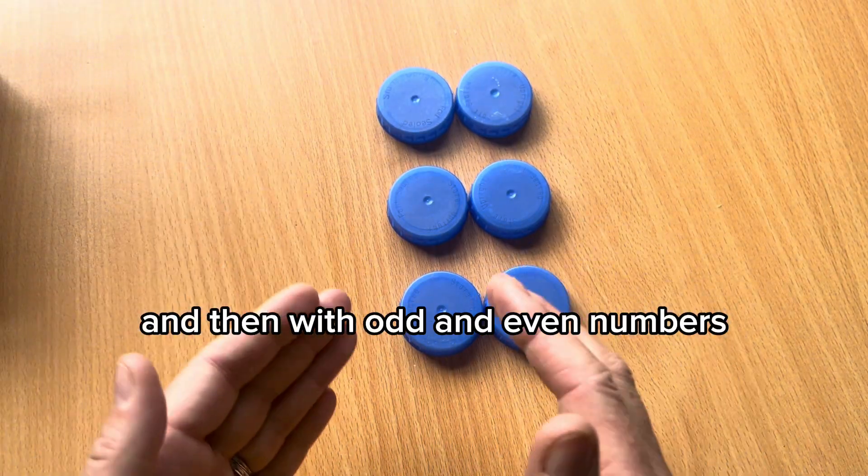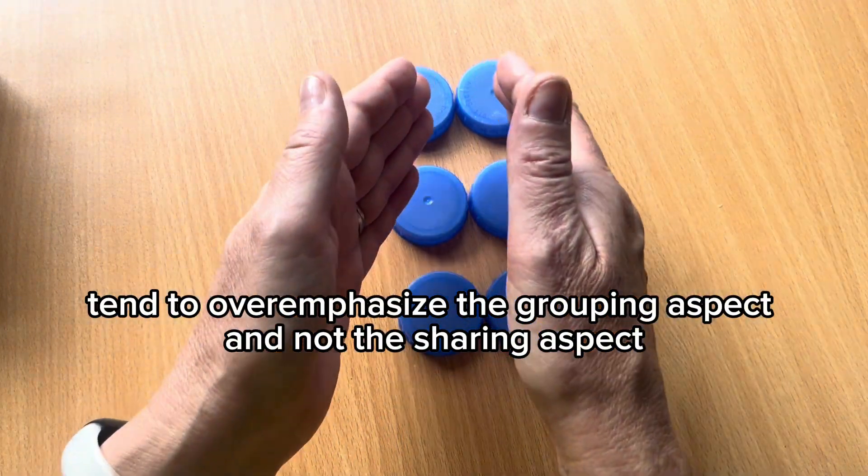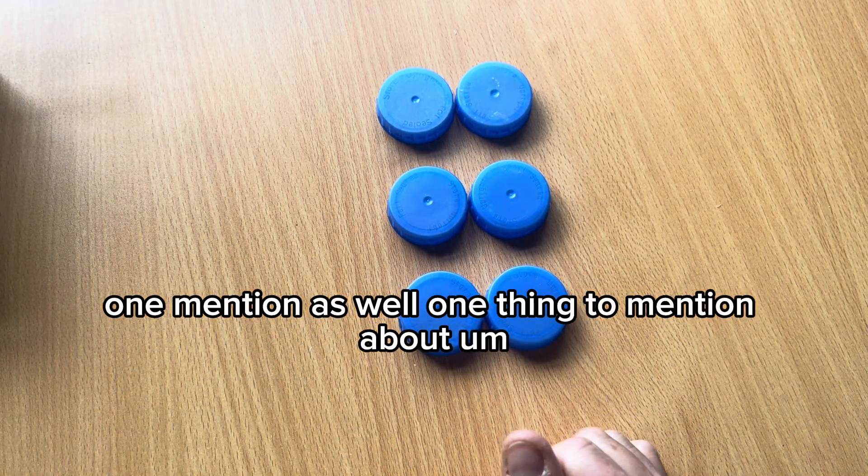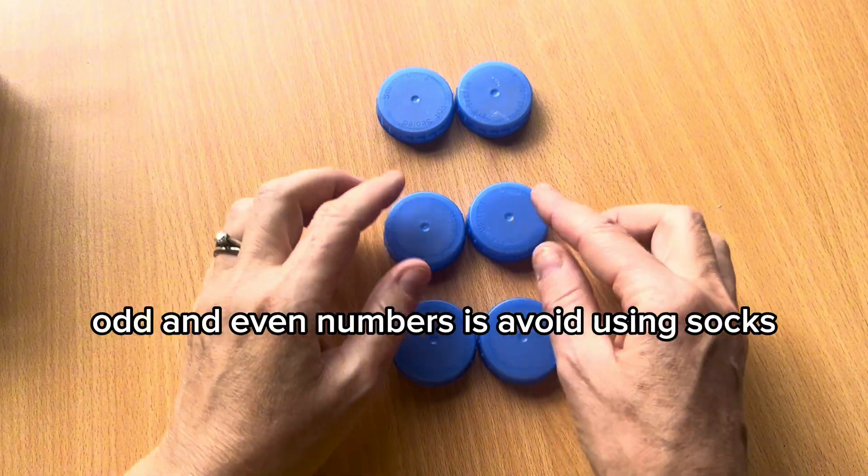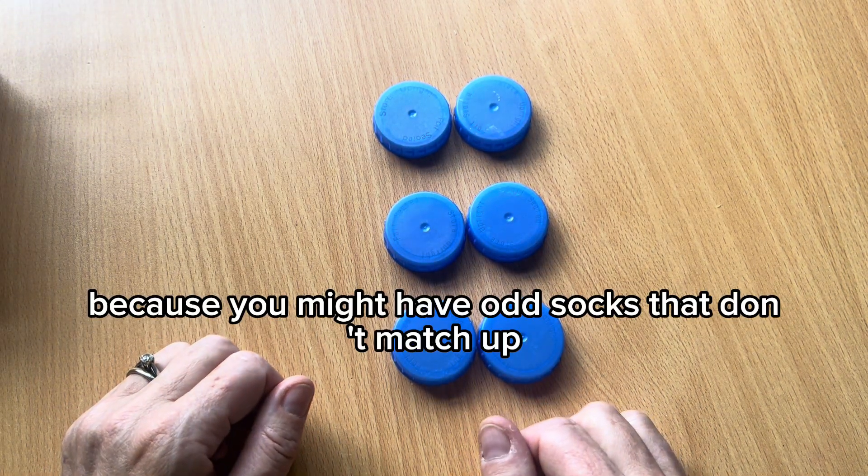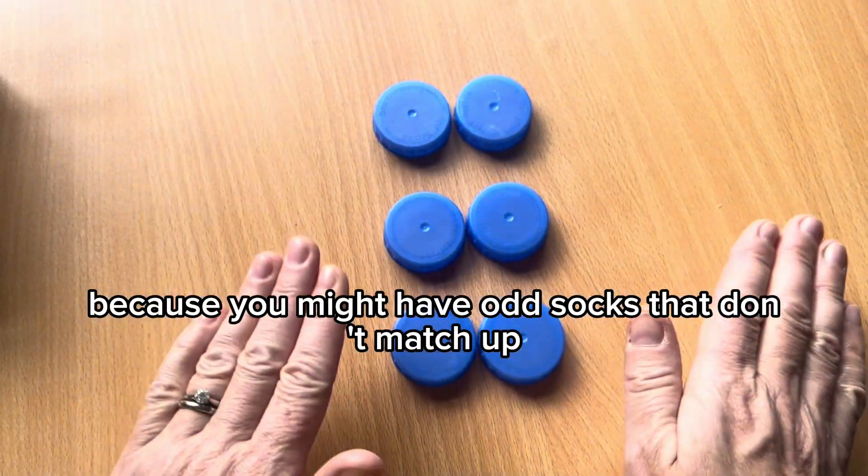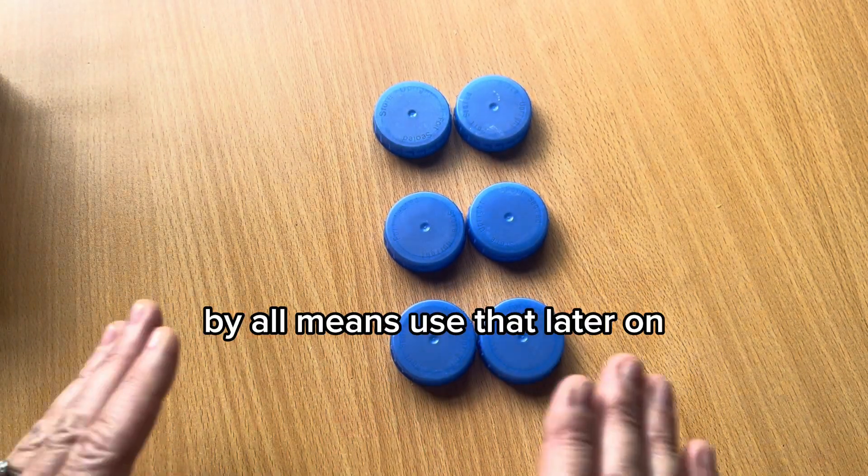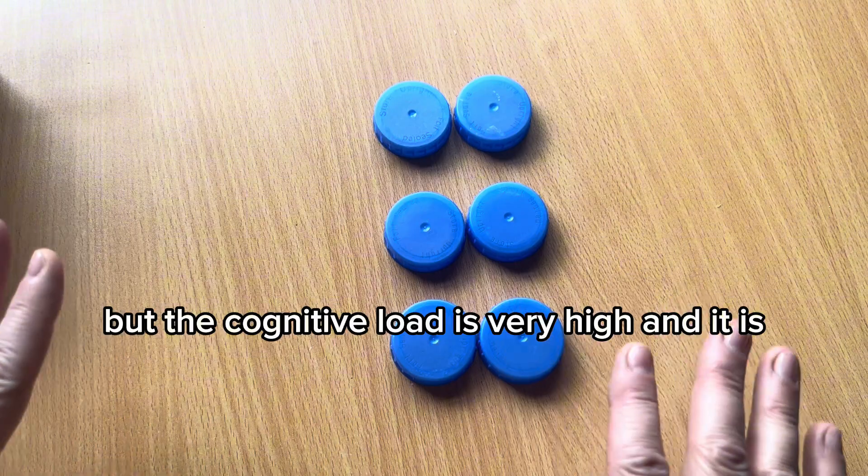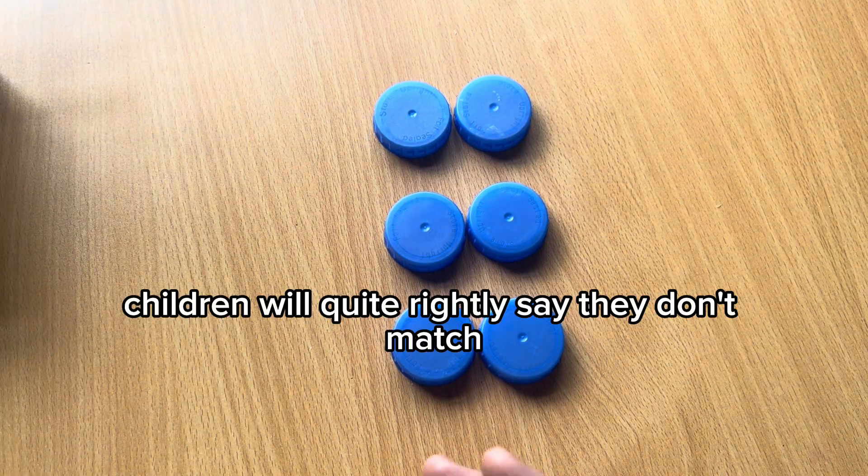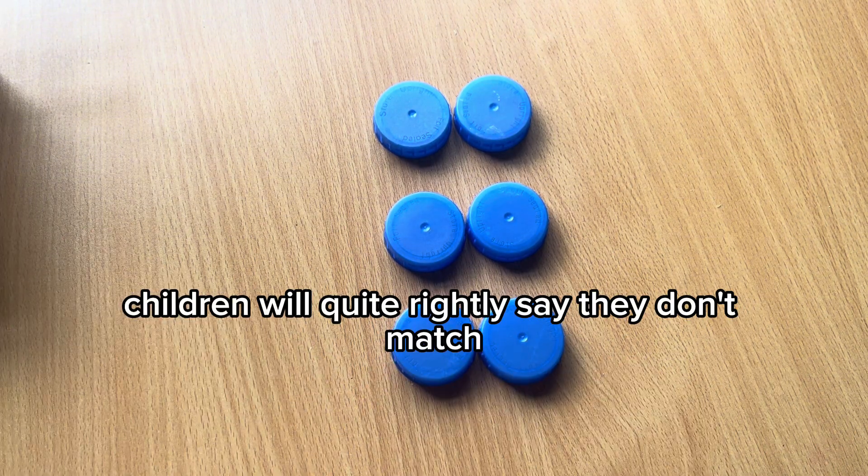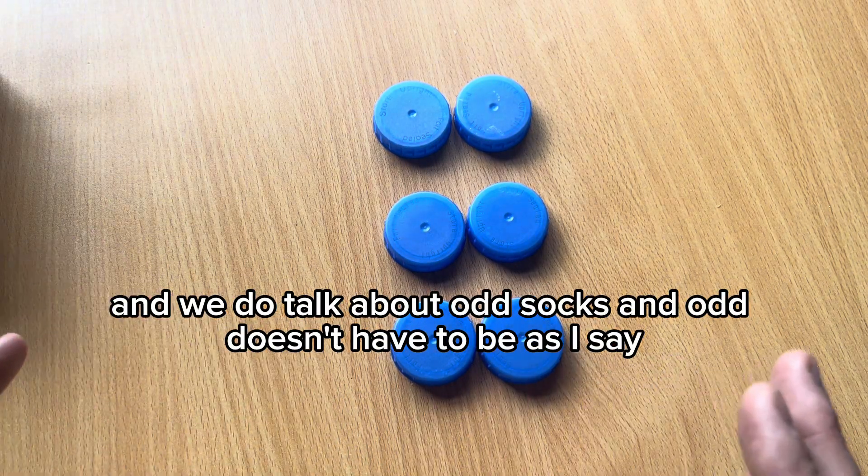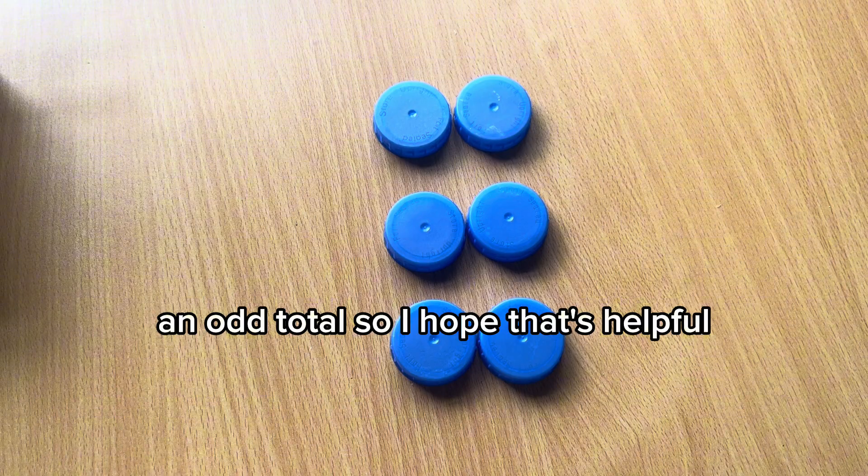And then, with odd and even numbers, tend to overemphasise the grouping aspect and not the sharing aspect. One mention as well, one thing to mention about odd and even numbers is avoid using socks because you might have odd socks that don't match up, but there might be still an even number of socks. By all means, use that later on, but the cognitive load is very high and children will quite rightly say they don't match, so therefore they're odd. And we do talk about odd socks. And odd doesn't have to be, as I say, an odd total. So I hope that's helpful, everyone.